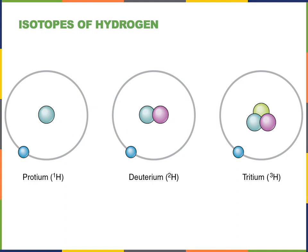There are different isotopes of an element — that is, atoms that can have more or less neutrons. If they have the same number of protons, they are still considered the same element. The most common form of hydrogen is protium, where there's just one proton and no neutrons. But there are two heavier isotopes: deuterium, which has one proton, one neutron, and one electron, giving it a mass of two atomic mass units; and tritium, which has an atomic mass of three, because there are two neutrons in addition to one proton and one electron.